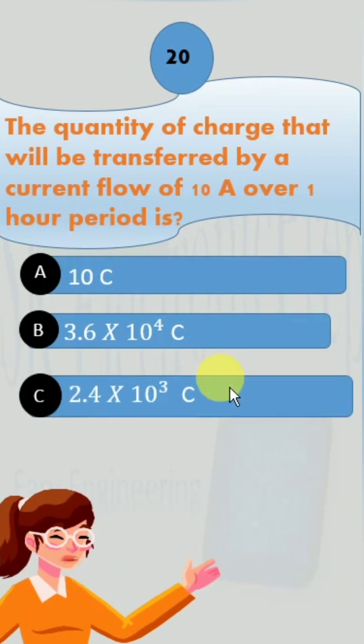option C, 2.4 × 10^3 coulomb; option D, 1.6 × 10^2 coulomb.